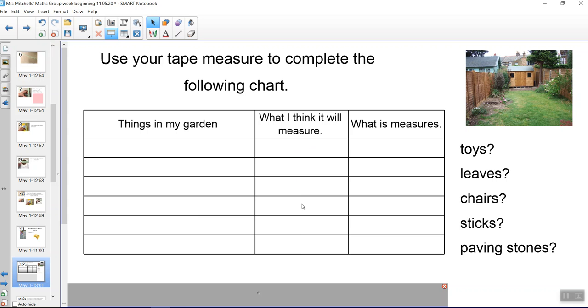And then before you measure them with your ruler, make an estimate. How long do you think those things are? And then once you've made all of your estimates you can get your ruler and you can measure those things.